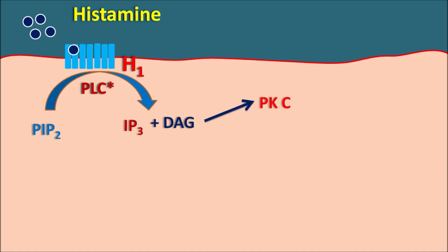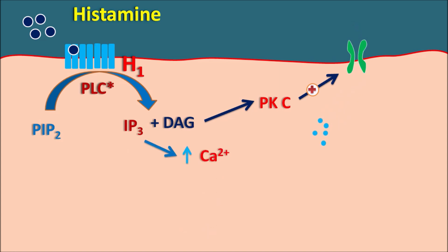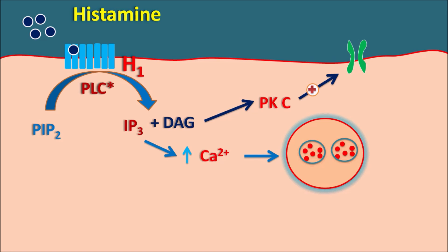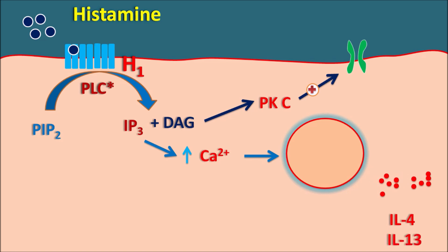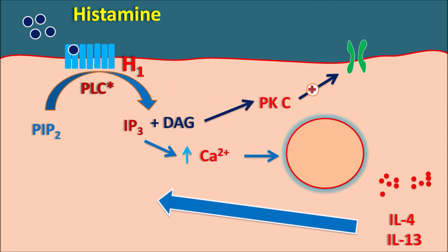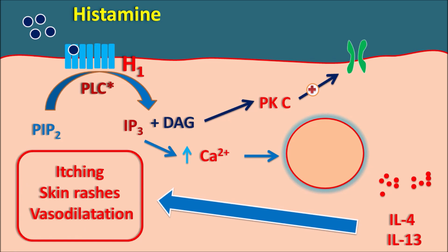Diacylglycerol activates protein kinase C, which stimulates calcium entry through specialized calcium channels. IP3 also releases intracellular calcium stores, so both IP3 and DAG increase intracellular calcium levels. This calcium promotes release of inflammatory mediators such as IL-4 and IL-13, causing inflammatory reactions. Additionally, increased calcium promotes release of nitric oxide within vascular smooth muscle, resulting in vasodilation. Together these mediators produce symptoms like itching, skin rashes, and vasodilation.